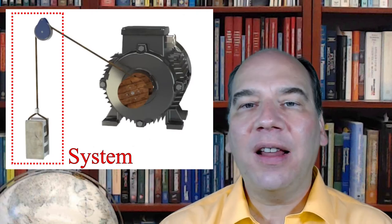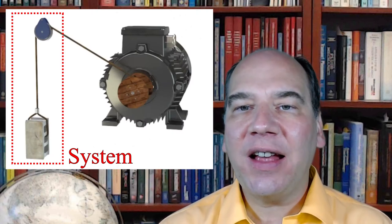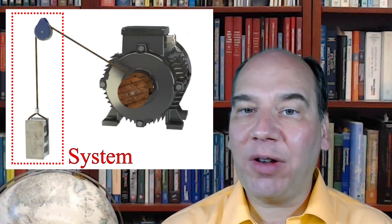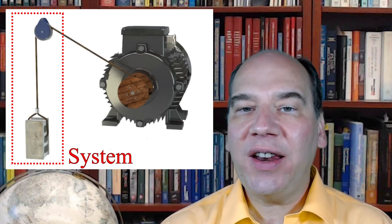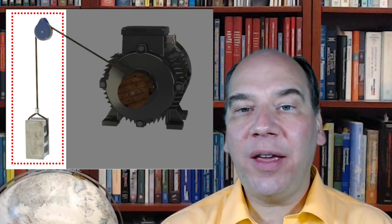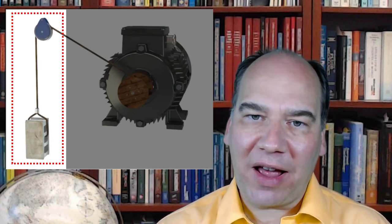If we're exerting an external force from the surroundings via the electric motor, the force we have to apply to lift that block is the combination of the force against gravity and the force against the rusty, older pulley. So let's change our definition of the system to include both the pulley and the block.